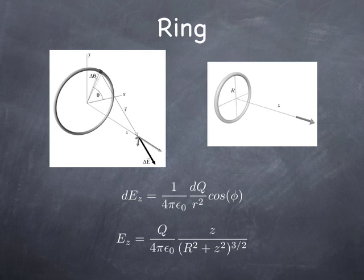That's the electric field along the axis of a ring. Notice we switch from dQ to Q because the integral of dQ is just Q — everything else is constant: φ is constant, R is constant, Z is constant. So the addition of all the Z components of the electric field is a trivial integral in this case.